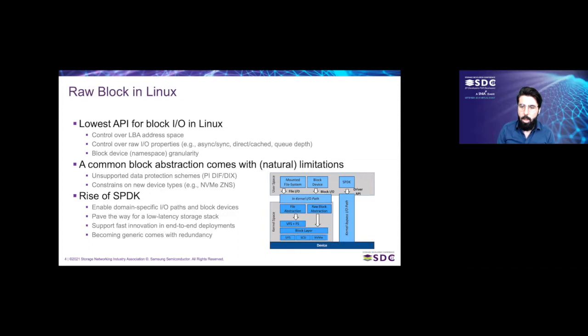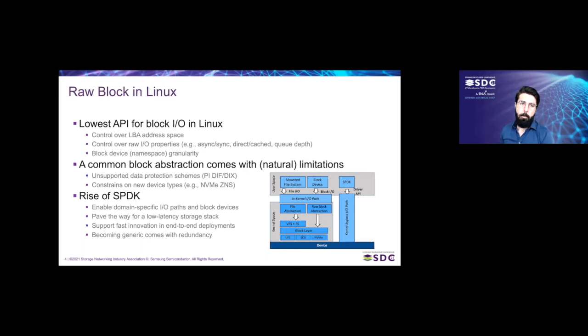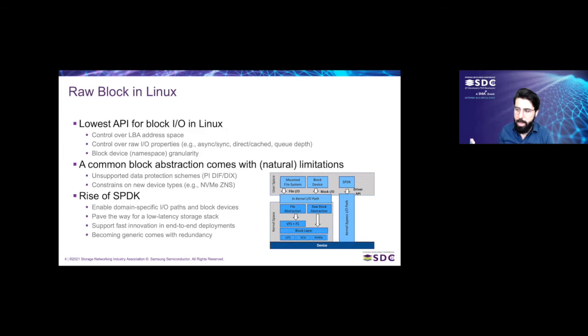If you look at Linux today, you traditionally have two main ways of submitting IO. You have file IO, which is very convenient and easy from an application perspective. If you want more control, applications rely on the raw block interface. This is convenient if you want control — you see the whole LBA address space, you can control IO properties such as whether you want asynchronous or synchronous, implement your own cache or leverage the kernel page cache, QoS priorities, and so on. Many applications have been very successful leveraging this for implementing object stores, key-value stores, and similar things.